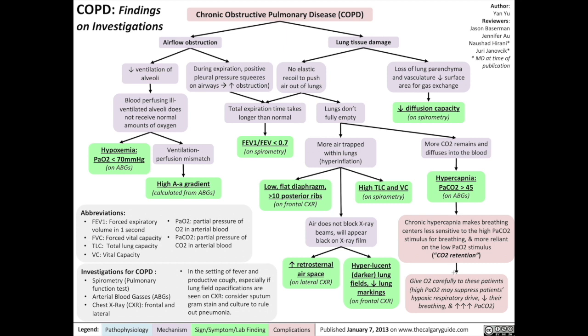We must give oxygen carefully to these patients, because a high partial pressure of oxygen may suppress the patient's hypoxic respiratory drive, thus reducing their breathing and further increasing their partial pressure of carbon dioxide in the blood. Finally, lung tissue damage also results in the loss of lung parenchyma and vasculature, which reduces the surface area available for gas exchange. On the pulmonary function test, this shows up as reduced diffusion capacity.